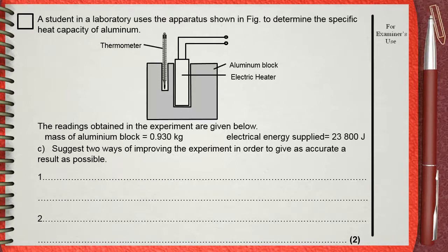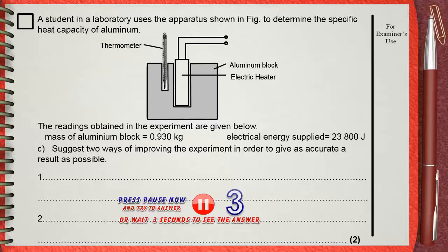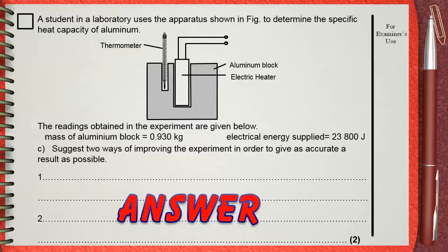Question C suggests two ways of improving the experiment in order to give as accurate a result as possible. To increase the accuracy of this experiment...